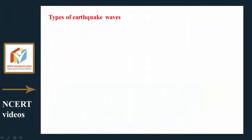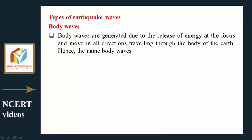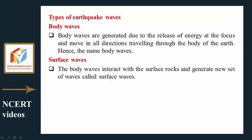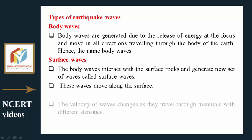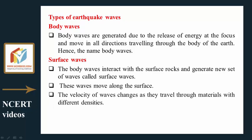Types of earthquake waves: Body waves are generated due to the release of energy at the focus and move in all directions, traveling through the body of the earth — hence the name body waves. The body waves interact with the surface rocks and generate a new set of waves called surface waves. These waves move along the surface, and the velocity of waves changes as they travel through materials with different densities.